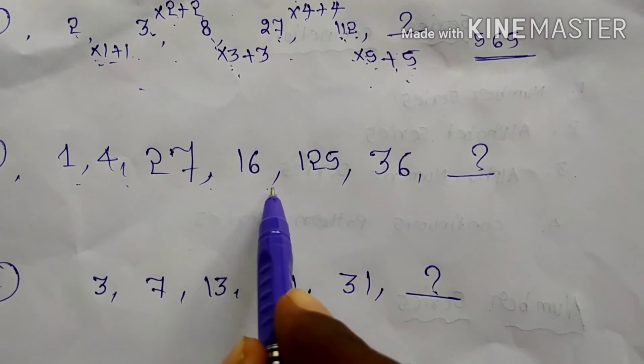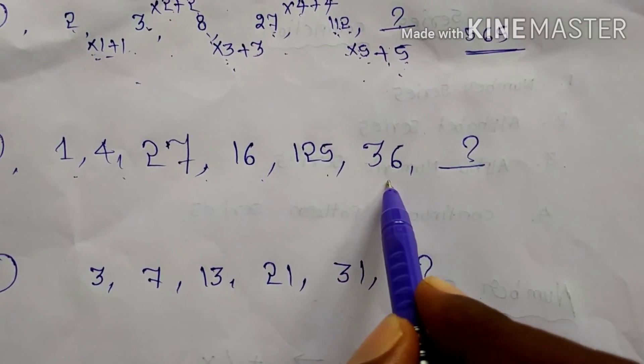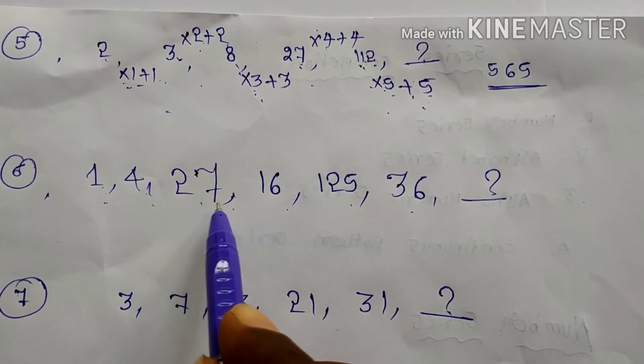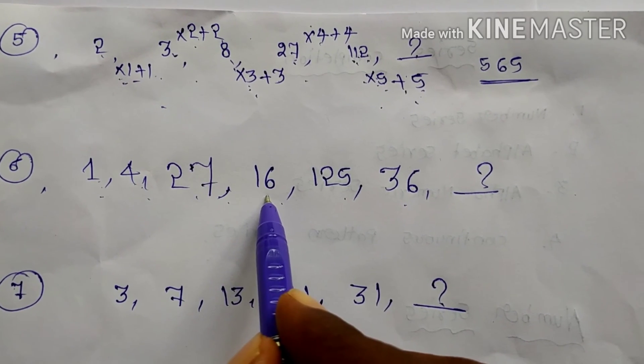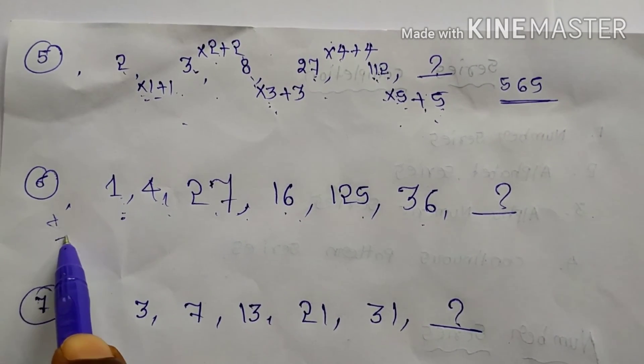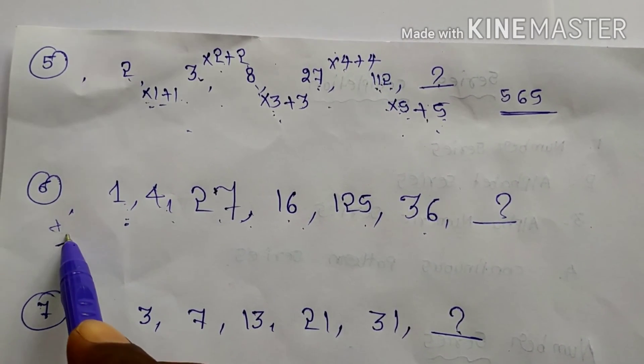Now you can see. 1, 4, 27, 16, 125, 36. Once you can observe. These are all squares and cubes only. By observation you can say easily. Squares and cubes. It's not addition. Just all squares and cubes only.